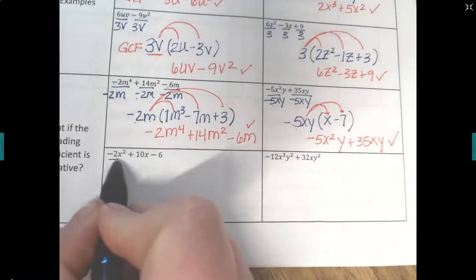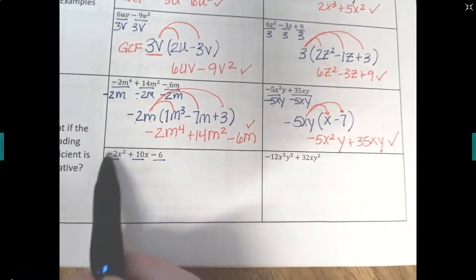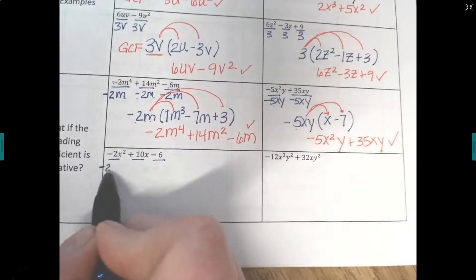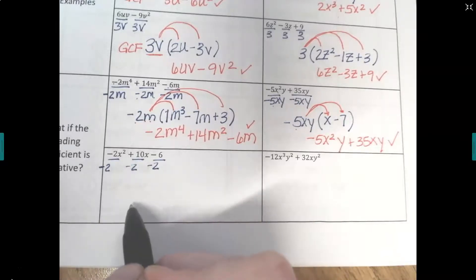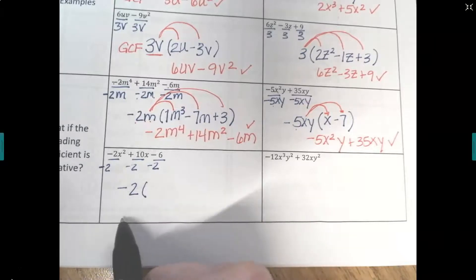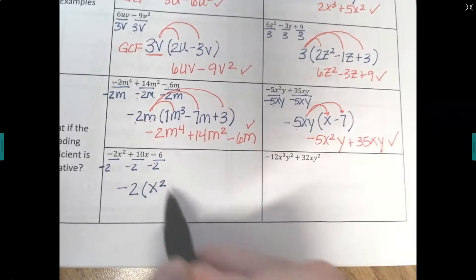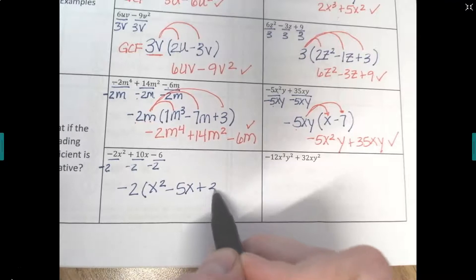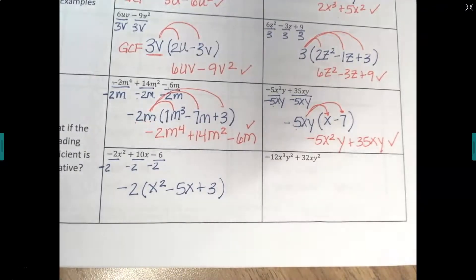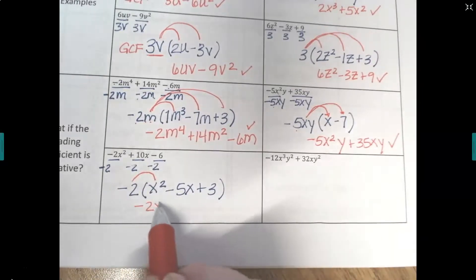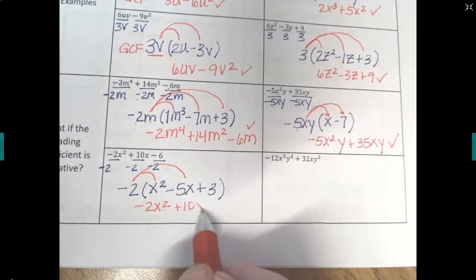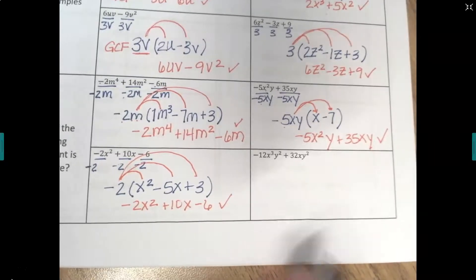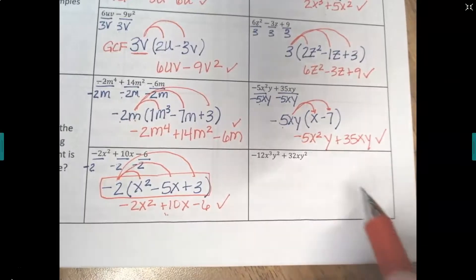Another negative leading coefficient — you know you'll divide by a negative. Check the smallest coefficient to see if it goes into all terms: the x's are not in all three terms, so the GCF is just negative 2. Dividing out negative 2: negative 2 over negative 2 is positive 1, but x squared stays. Positive 10 over negative 2 is negative 5, and x stays. Negative 6 over negative 2 is positive 3. Check: negative 2 times x squared is negative 2x squared; negative 2 times negative 5x is positive 10x; negative 2 times 3 is negative 6 — correct. This is our factored form.